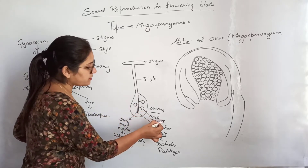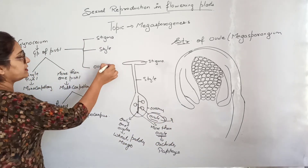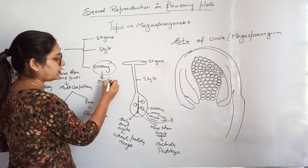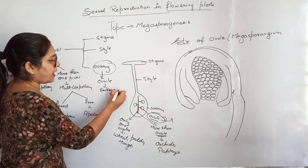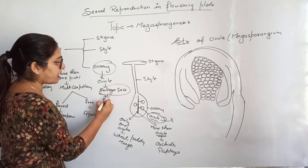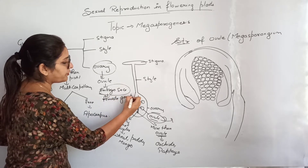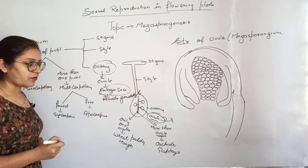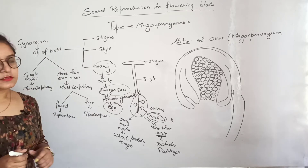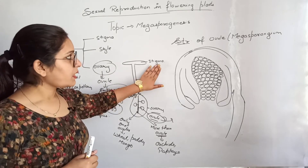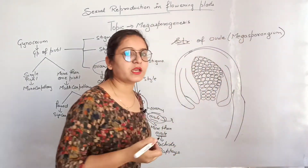Now we will study the detailed structure of the ovule. The ovary has ovules — either one or many — and each ovule forms an embryo sac. The embryo sac is referred to as the female gametophyte, meaning it carries the female gamete, which is the egg. Ovules are also referred to as megasporangium, containing the megaspore.